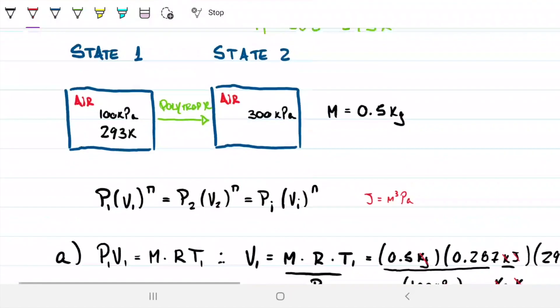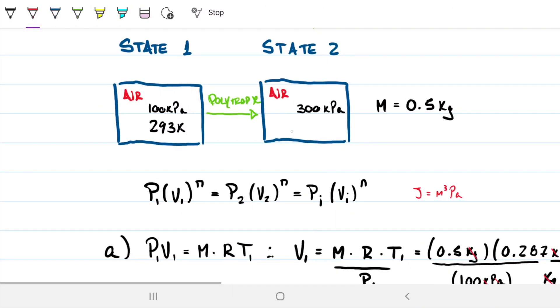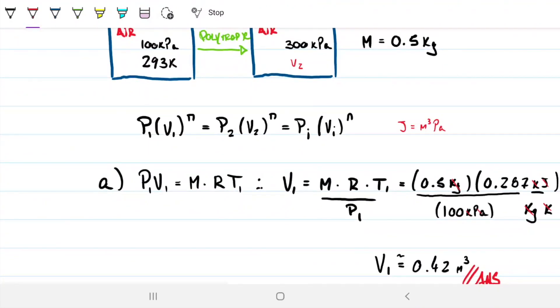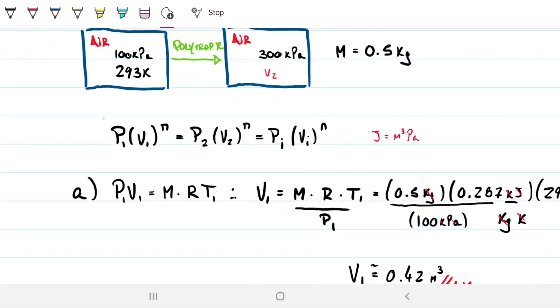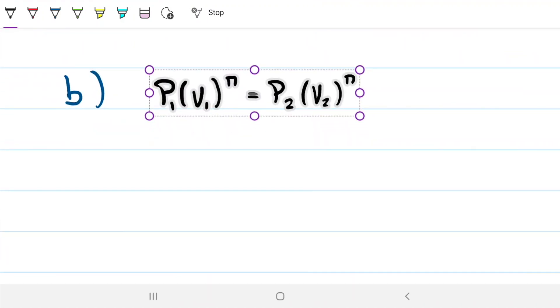Next up, part B: we want to find the final volume of air, V₂. Note this is a polytropic process, so P₁V₁ⁿ = P₂V₂ⁿ is valid here. On this equation, the only unknown is actually V₂. We have the index n given to us in the problem statement, we have P₁, we have P₂, we have V₁ that we just found. So we can use this characteristic of polytropic processes and solve for V₂.